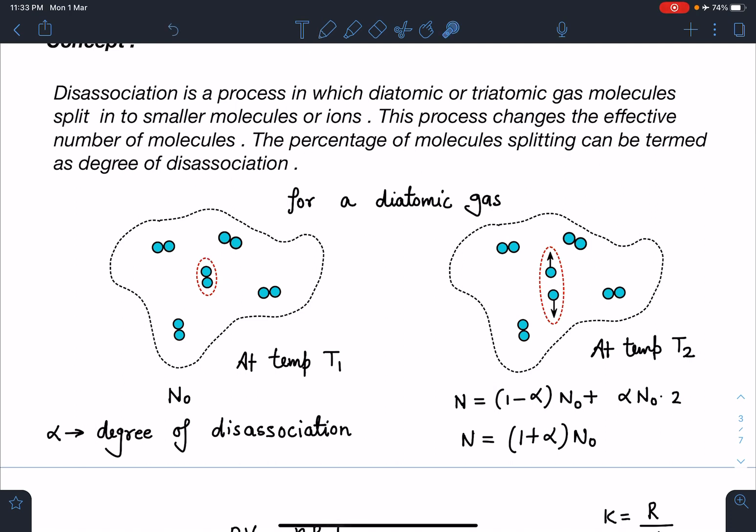For a diatomic gas, this diagram is shown here. You can see this molecule here is going to dissociate and it converts into monatomic gases. Initial temperature which is given here is T₁ and let's say the number of molecules is N₀, which is not given in the problem, so definitely we need to see that this N₀ will get eliminated.